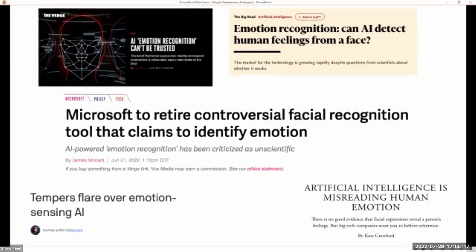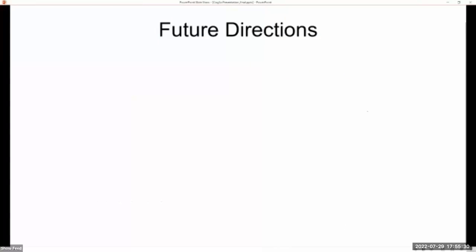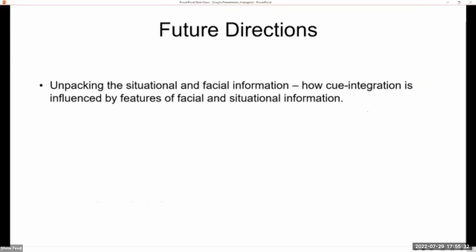However, we do recognize that there's a long way to go and we need better behavioral models of emotions before we can implement these in fields of technology or clinical psychology. So some of our future directions in pursuit of those goals is to continue unpacking the information about facial and situational cues and the features that are associated with these cues to understand how people infer others' emotion states.